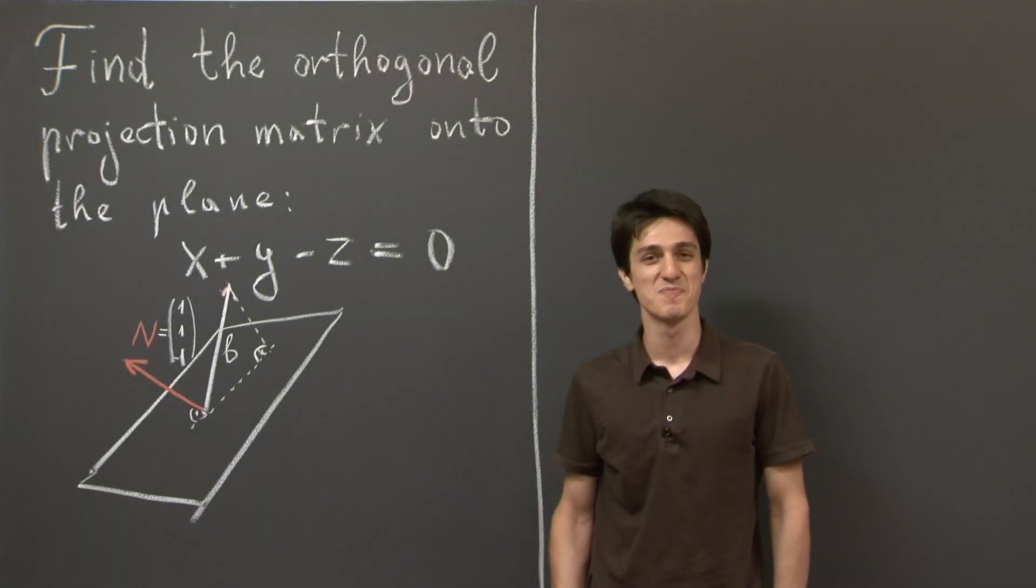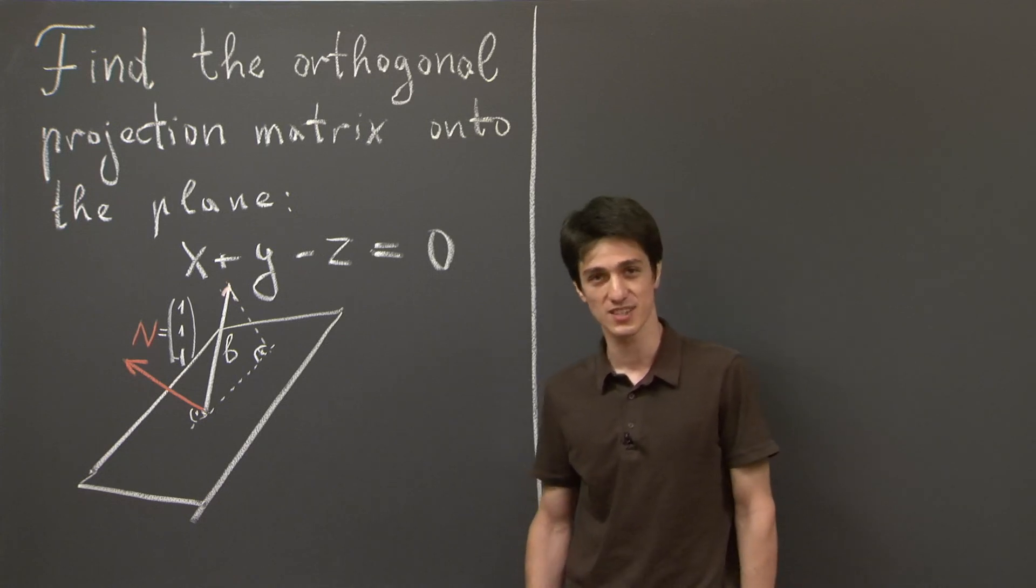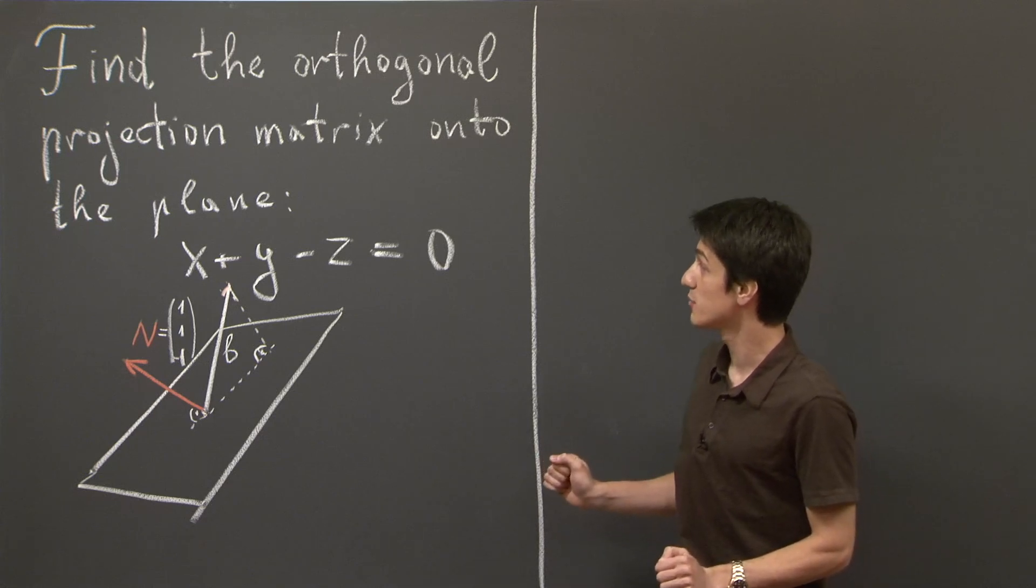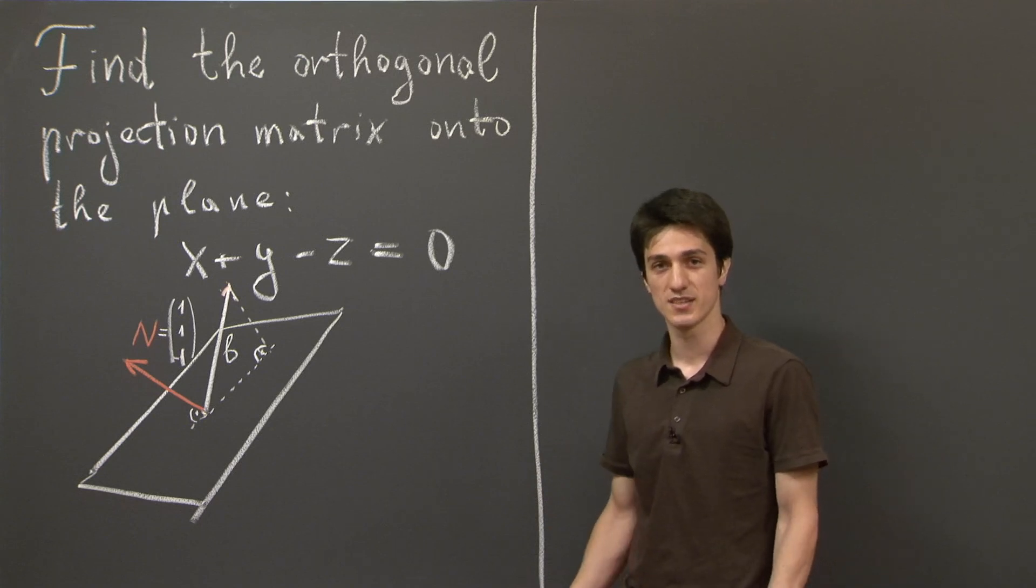Hi, guys. My name is Nicola. And in this video, we're going to work out an example of an orthogonal projection matrix. Specifically, we're going to compute the projection matrix onto the plane given by the equation x plus y minus z equals 0.